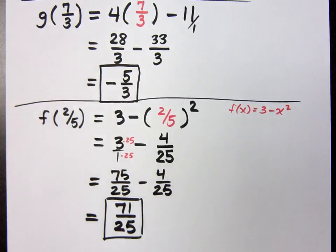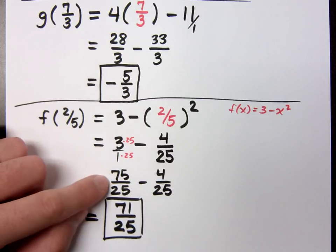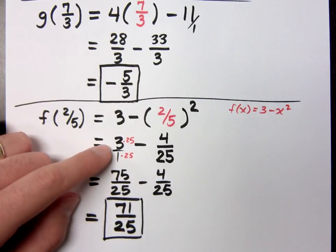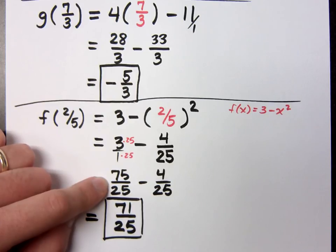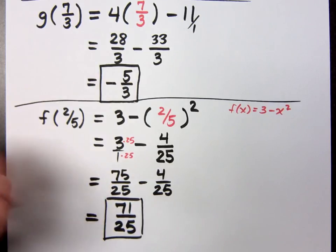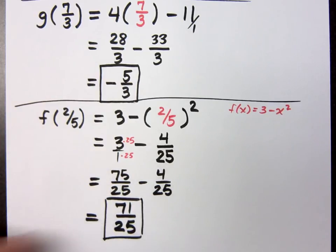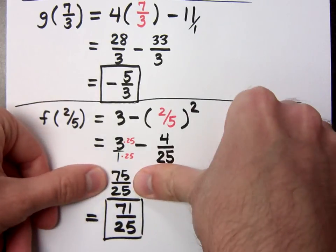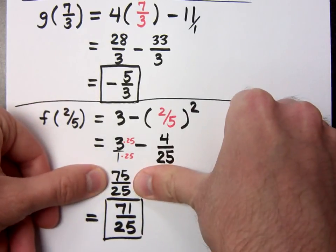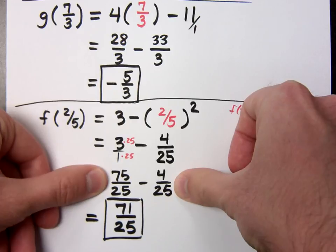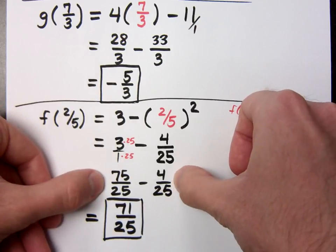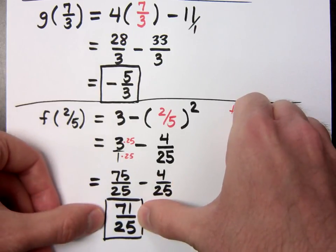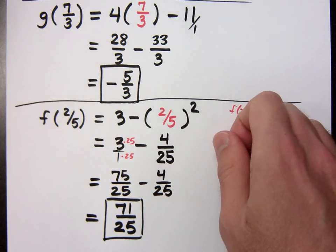75 and 25 can reduce, but that takes us going up the wrong way. We convert 3 to 75 over 25, so that we have a common denominator, so that we can combine those guys. Don't look at this as 75 over 25. Look at it in the whole problem that you're combining it with something else. So, you have to adjust yourself, so you can then become 1.